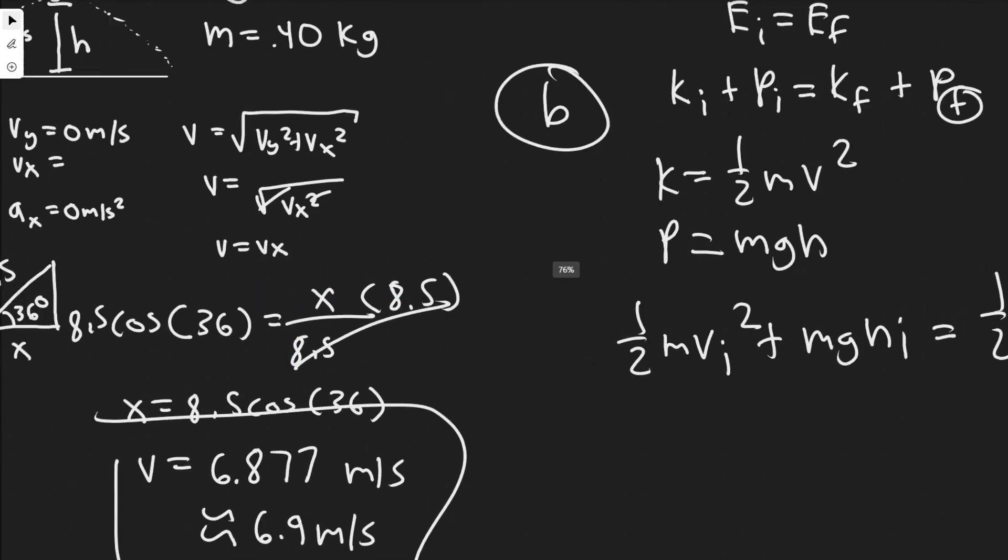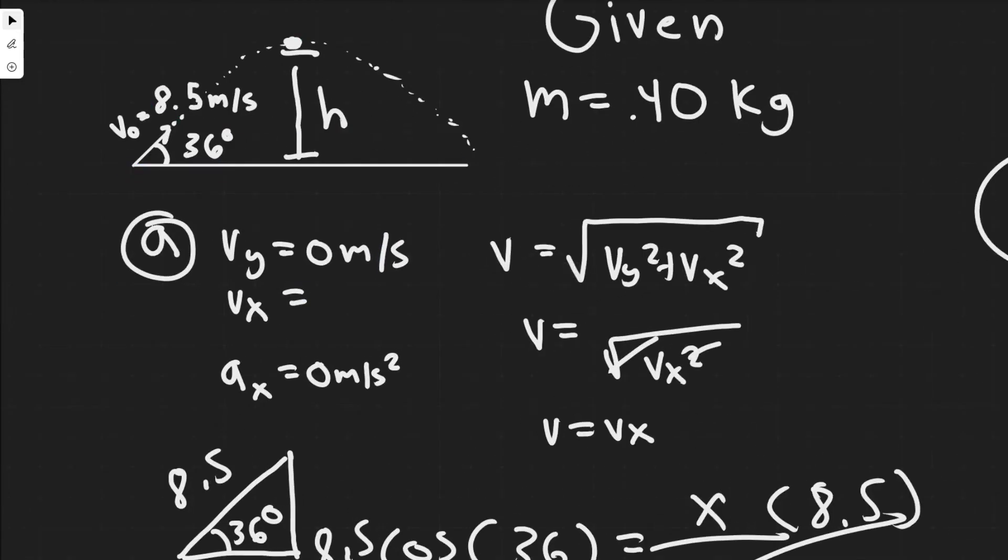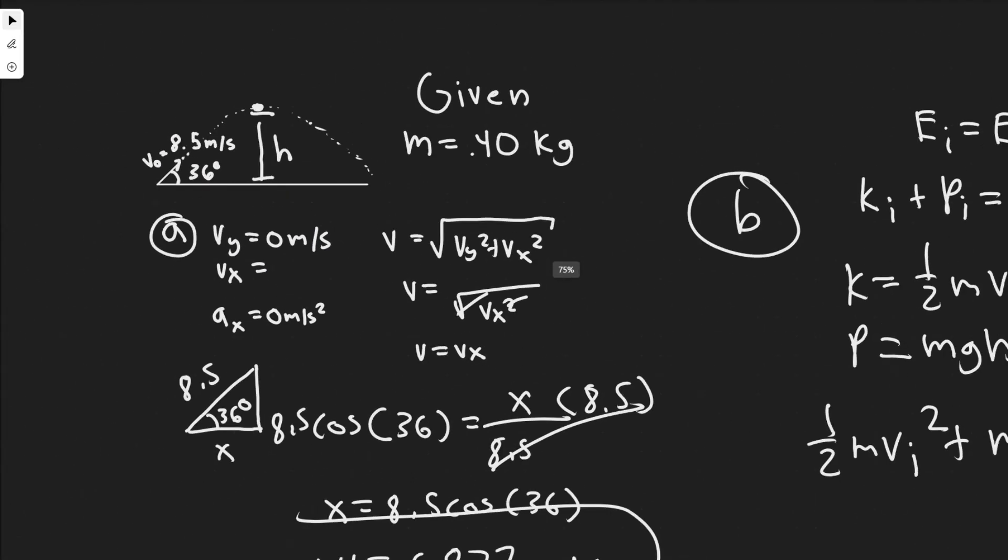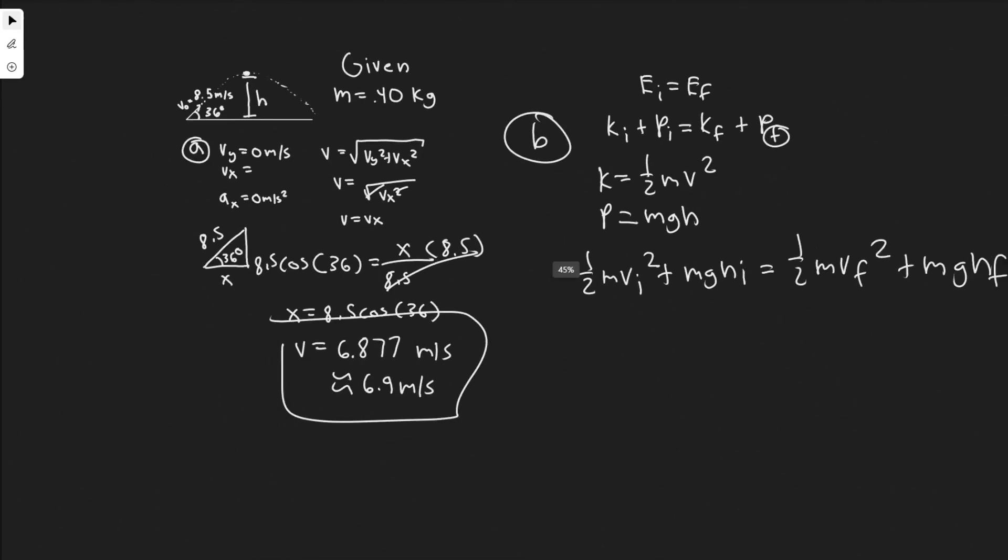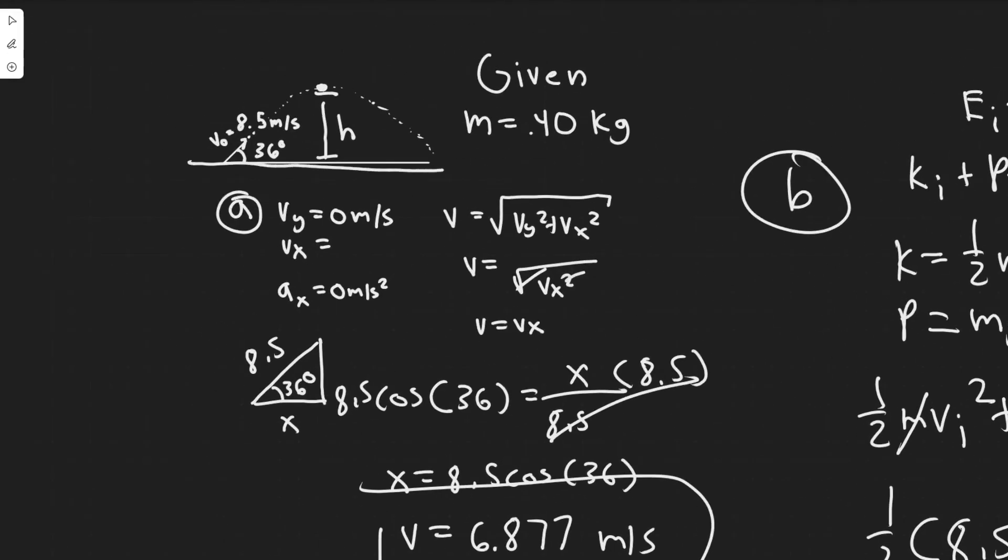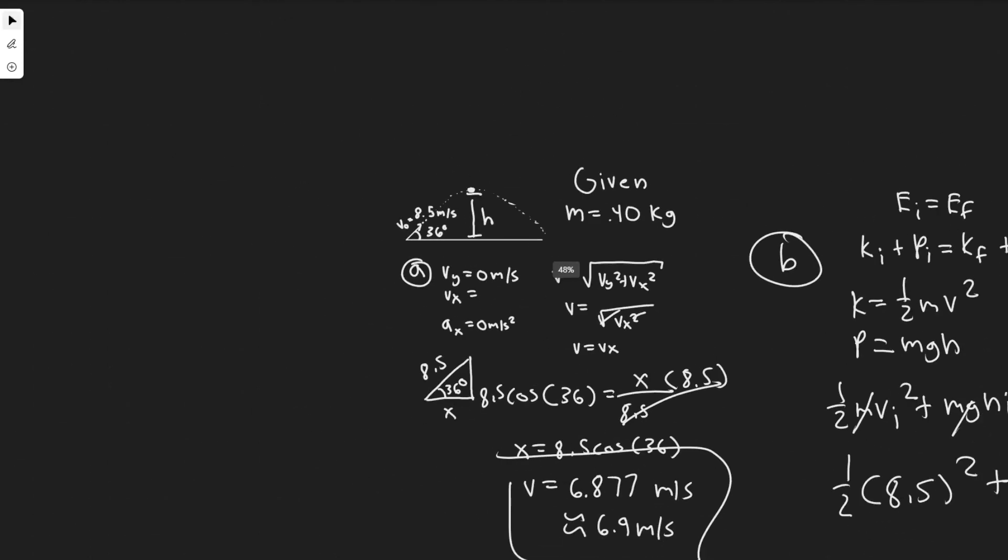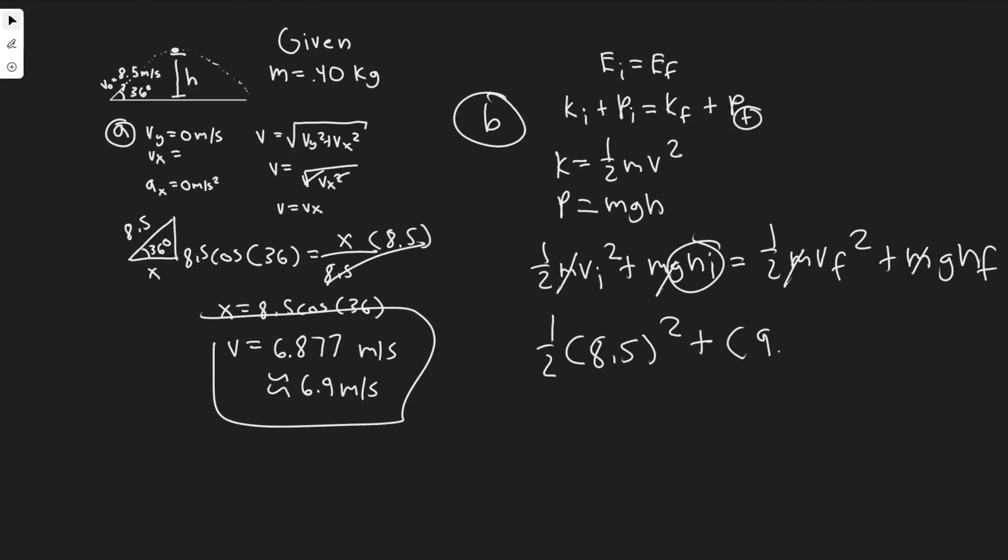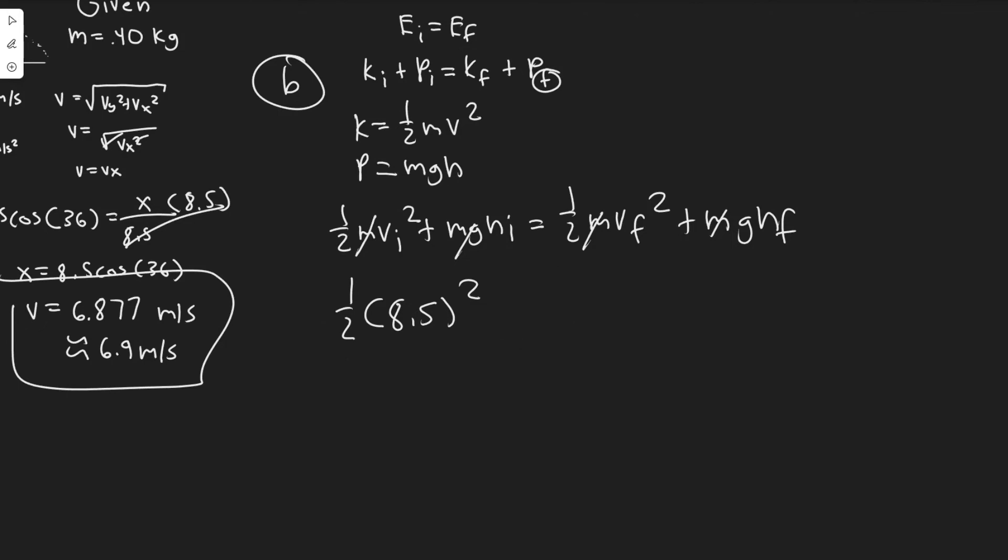Looking at our drawing, we know the initial velocity is 8.5 meters per second. Let's go ahead and write that in. I'm just going to cancel the mass from every term since we have a mass in every term. So one half times the initial velocity 8.5 squared plus g times h_initial. Notice the initial height - we can pick where we want to do that. I'm just going to say this is the bottom at zero. So the initial height is zero, meaning the whole term goes to zero. So this just disappears.